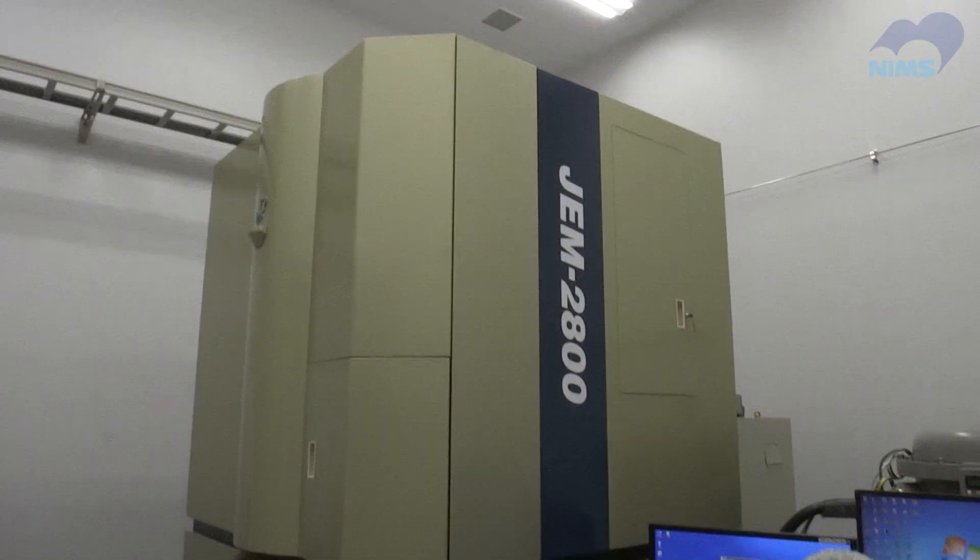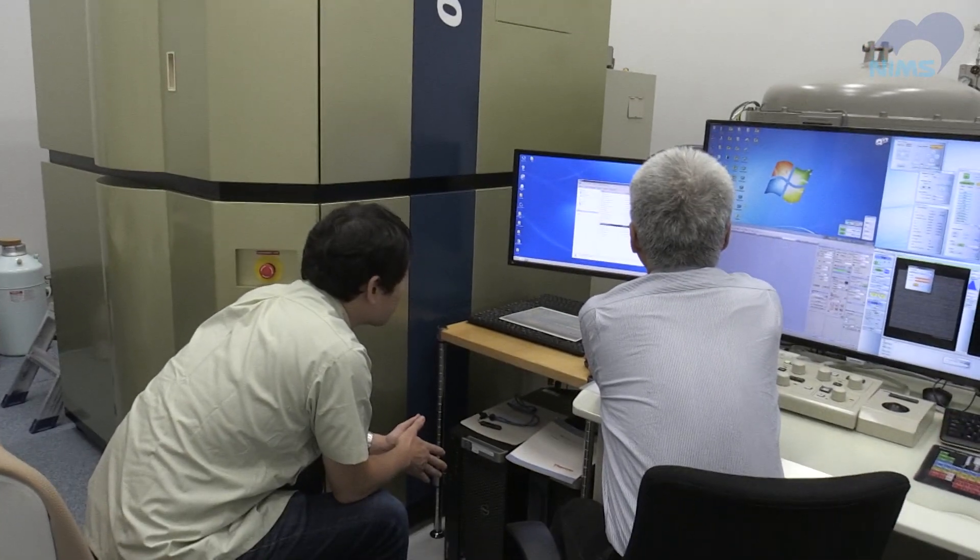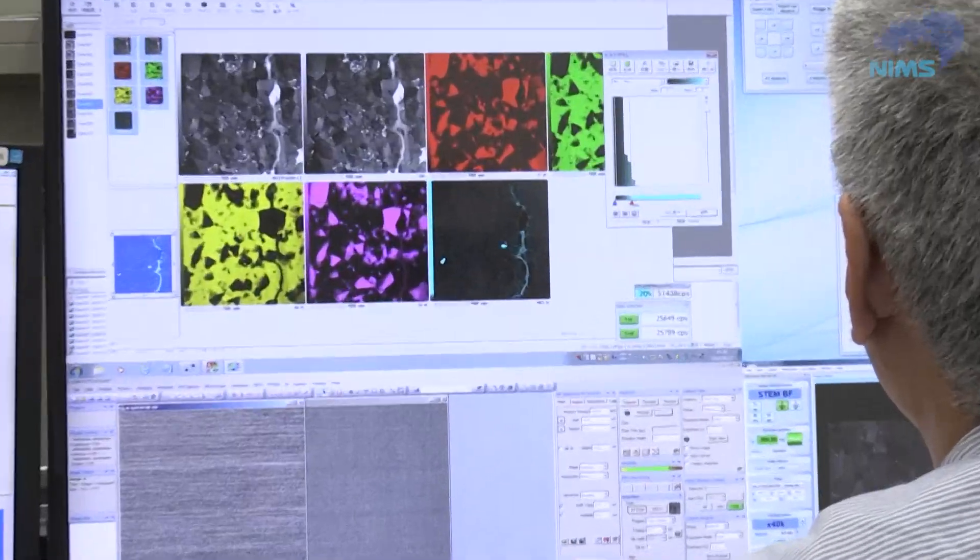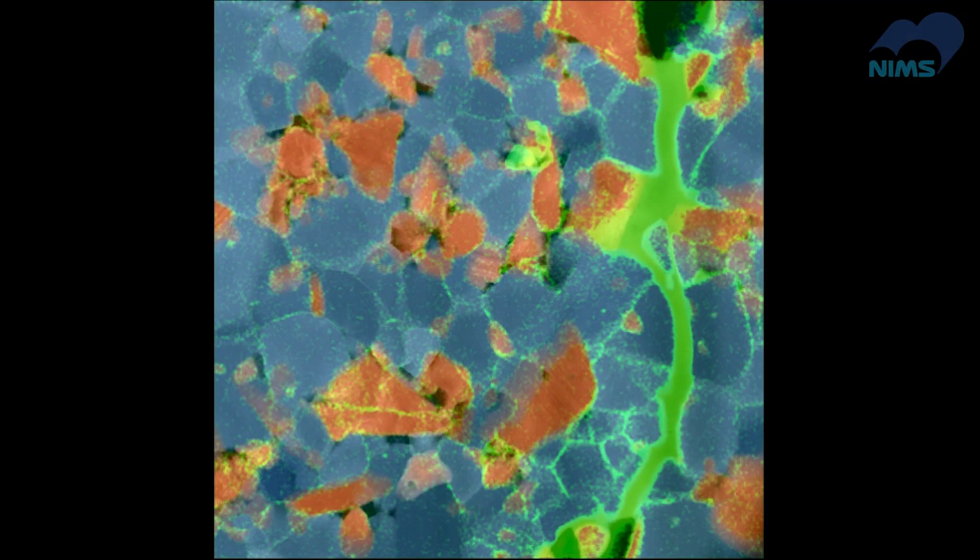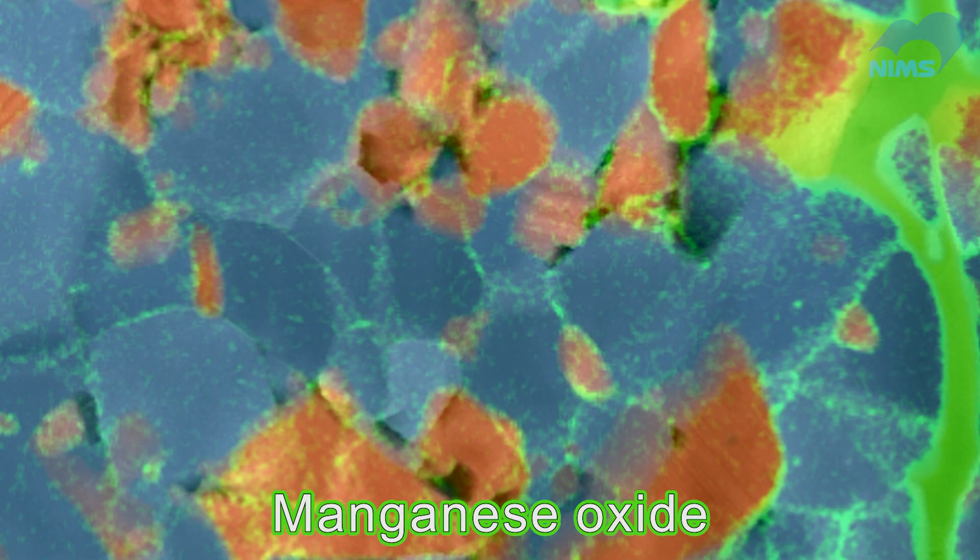He succeeded in creating a manganese 3D network in this sample and confirmed the distribution of elements within it. The green area along the grain boundaries contains manganese oxide. This is an ideal 3D network for the self-healing of cracks.